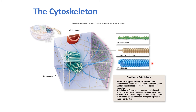Intermediate filaments also help maintain the structure and shape of cells. Microtubules are the largest in diameter and are important for maintaining cell structure and shape. Microtubules also fix organelles in place inside the cell, acting like railroad tracks to help organize organelles as they move around inside the cell.